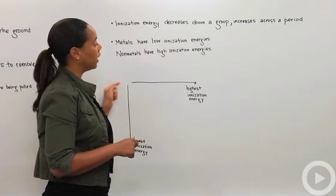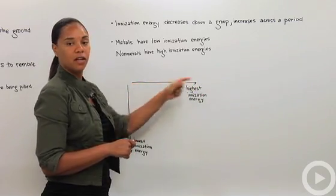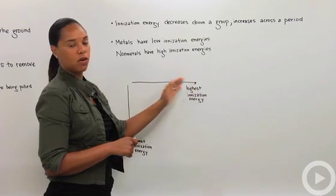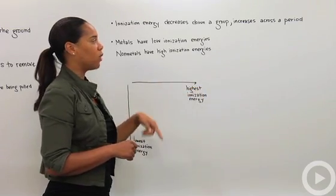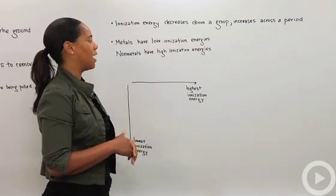Ionization energy increases across a period. Remember, the periods are the rows going from left to right. At the top right-hand corner of the periodic table is where you'll have the highest ionization energy.